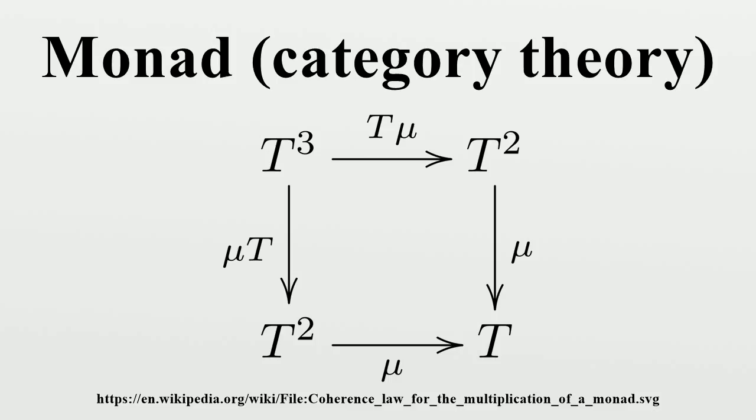a monad on C can alternatively be defined as a monoid in the category whose objects are the endofunctors of C and whose morphisms are the natural transformations between them, with the monoidal structure induced by the composition of endofunctors.